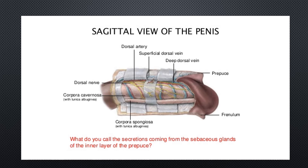There is a question: what do you call the secretions coming from the sebaceous glands of the inner layer of the prepuce? These are called smegma. There are eccrine and apocrine sweat glands in the body. In women there is the labia majora, and in men there is the scrotum and prepuce. When internal body temperature rises, sweat glands activate. The sebaceous glands found on the inner layer of the prepuce provide lubrication when body temperature rises.